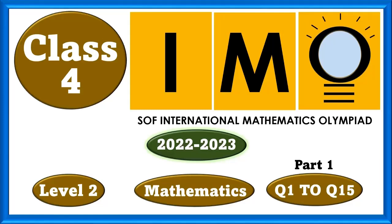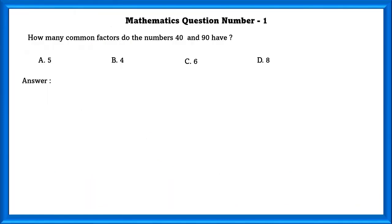Class 4, IMO Level 2. Mathematics Question Number 1: How many common factors do the numbers 40 and 90 have?